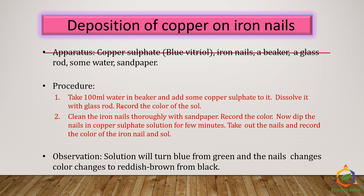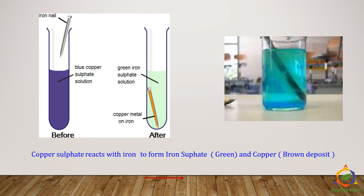After a few minutes, take out the nails and record the color of the iron nail and the solution. The observation is that the copper sulfate solution will turn from blue to green, and the nails change color from their original black to reddish brown. This is the photograph of the same experiment — an iron nail kept in a beaker of copper sulfate. As time passes, the color of the copper sulfate fades and the copper metal, which has a brownish-red color, gets deposited on the surface of the iron. The reaction is: copper sulfate + iron gives ferrous sulfate and metallic copper.